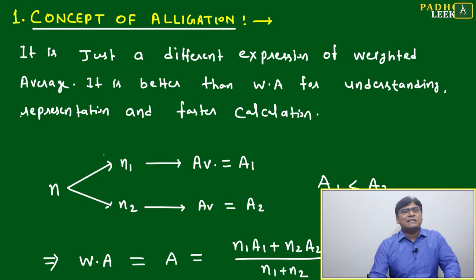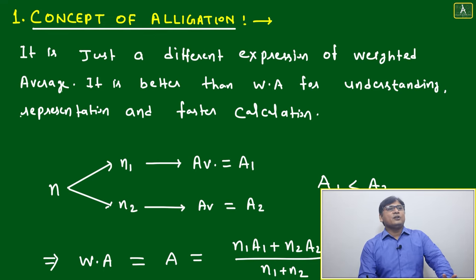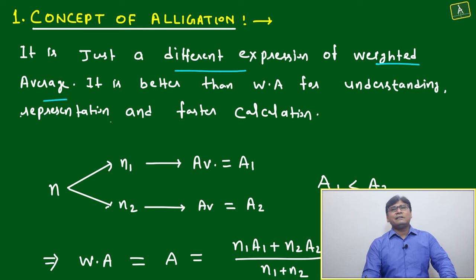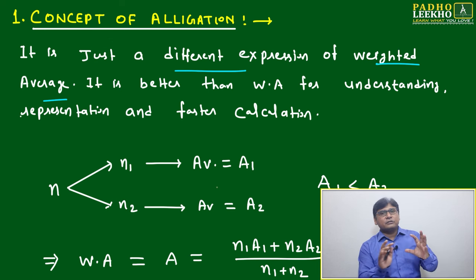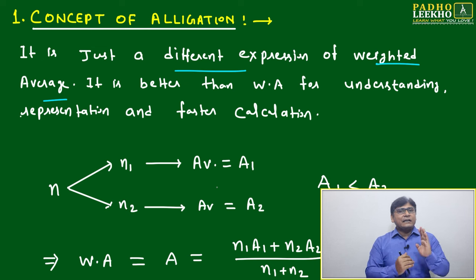We'll try to understand the concept of alligation in a very simple way. We can define alligation as just a different expression of weighted average. It is actually weighted average, just written in a different way. It looks like a geometrical representation or graphical representation of weighted average.